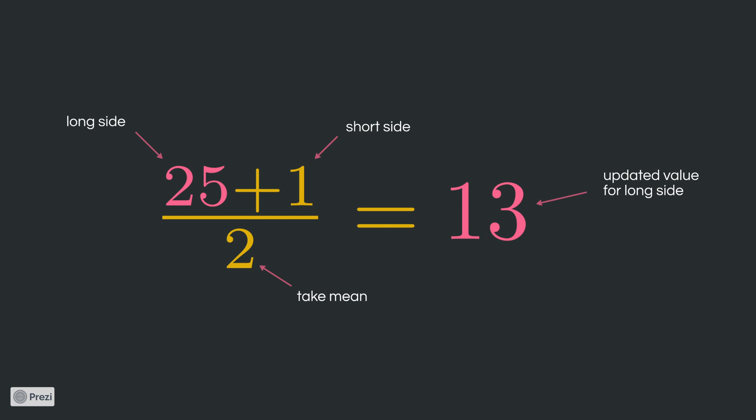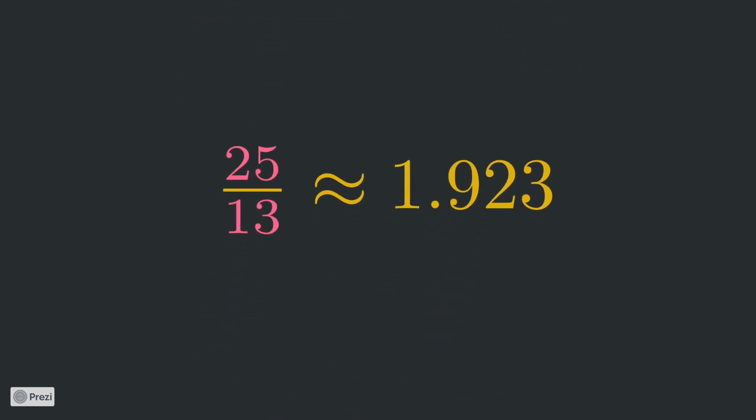The new obtained value of 13 will be assigned to the long side and therefore replaces 25 as side length. The next step is very important. Remember, in each step we must maintain the condition of the area of 25.